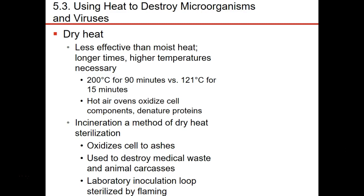Dry heat is not nearly as effective as moist heat. It takes a longer time to use dry heat to kill microbes. They work the same way — they still denature proteins — but they also use oxidation of the cell wall and cell membrane to kill microbes. We use dry heat in our lab all the time when sterilizing inoculating loops and needles.